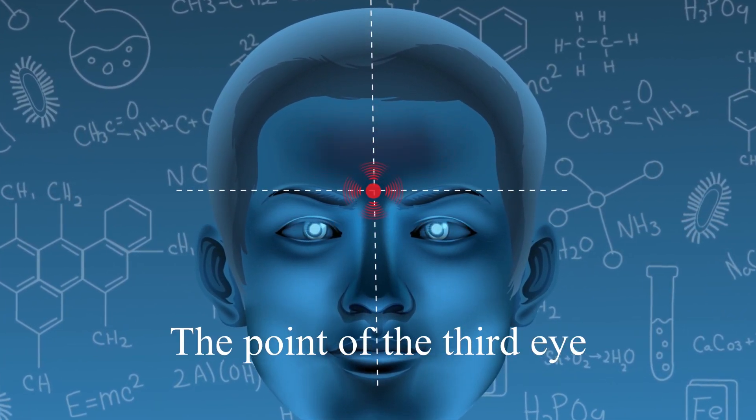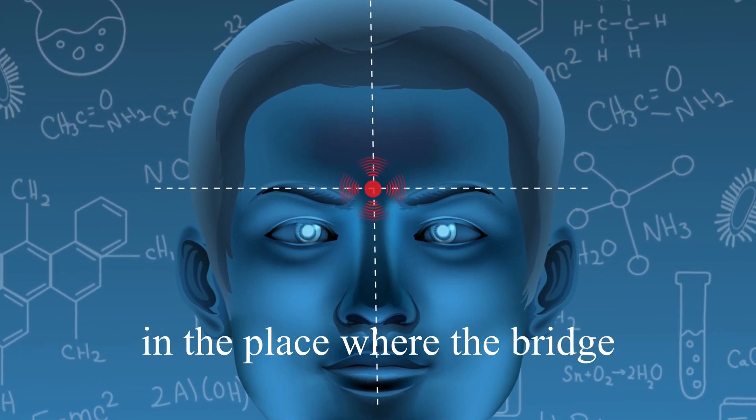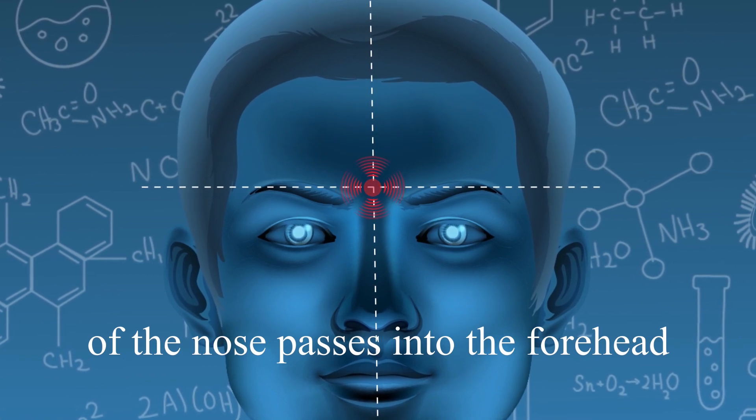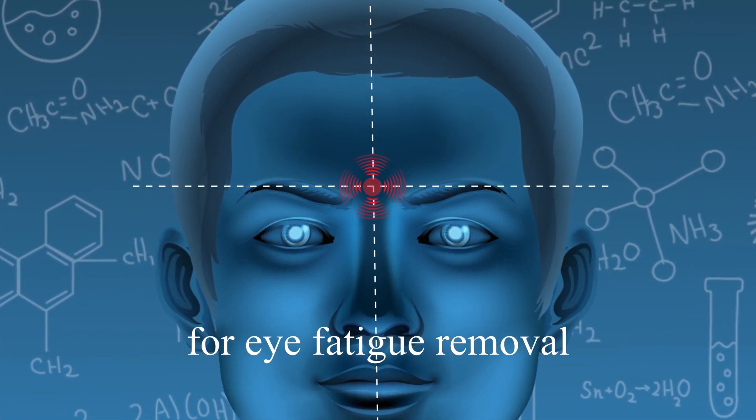Yen Thang Point. The point of the third eye, or Yen Thang, is situated between the eyebrows, in the place where the bridge of the nose passes into the forehead. This point is also responsible for eye fatigue removal.